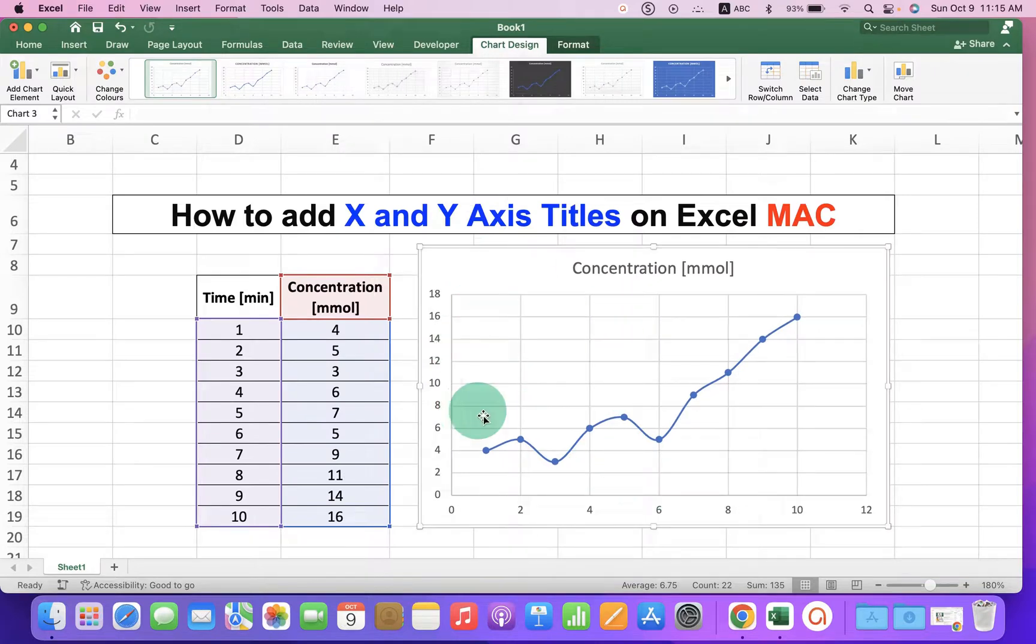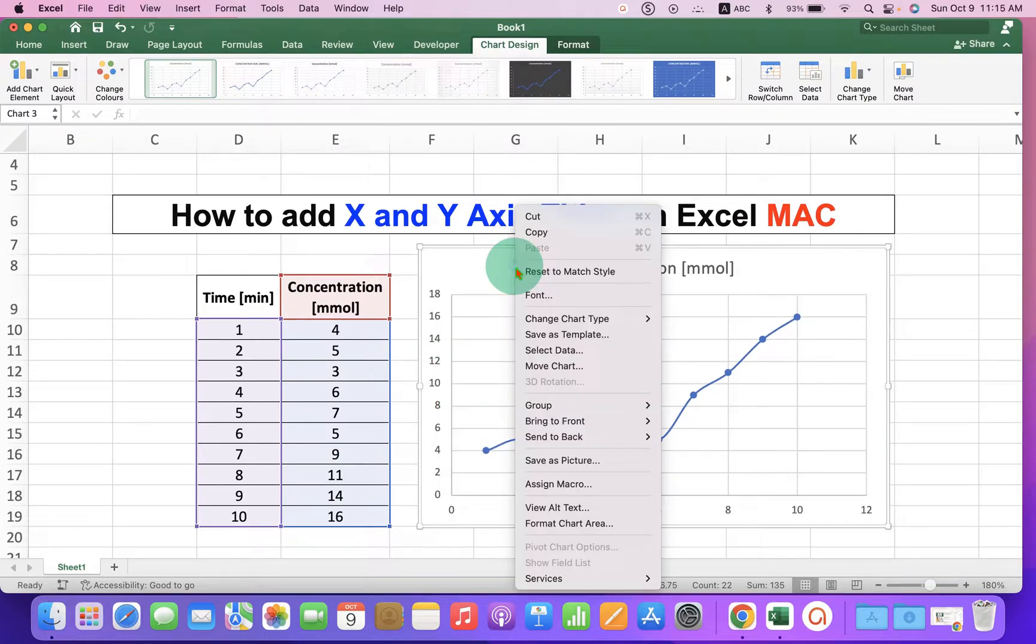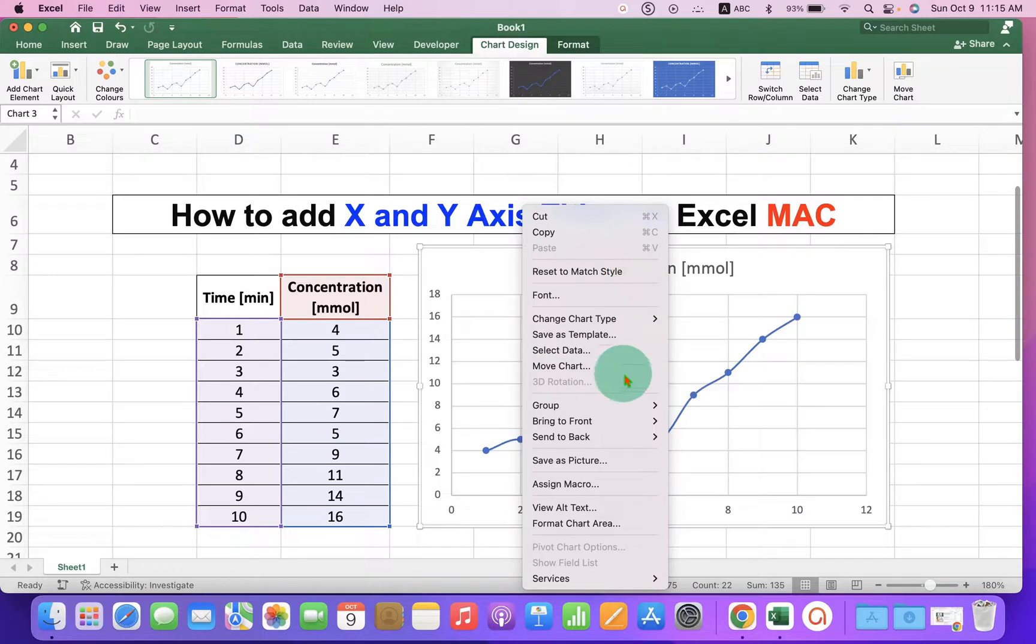as you can see if we right click on the graph, there is no option to add X-axis and Y-axis titles.